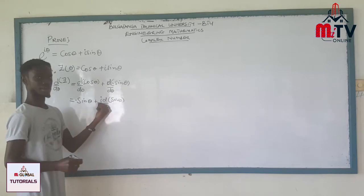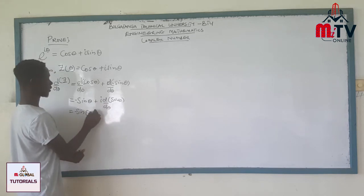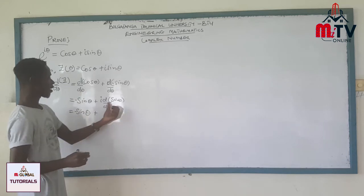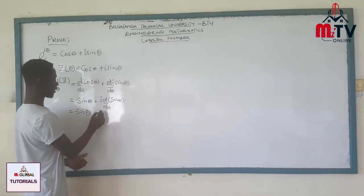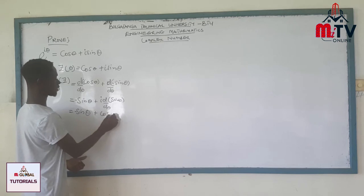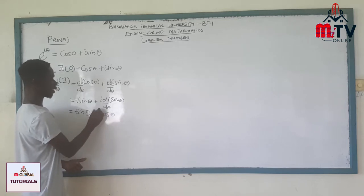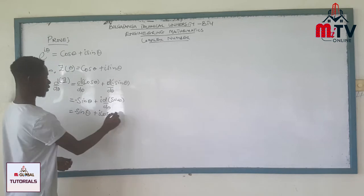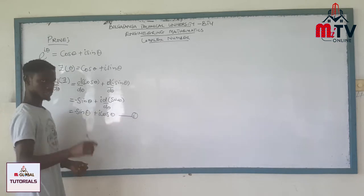We are bringing i out because i is a constant. So we have: minus sine θ plus i cos θ, since differentiating sine θ gives us cos θ. We can label this equation as Equation 1.